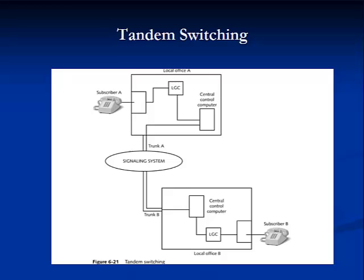A long-distance call starts just like a local call. At the end office, the LGC is scanning the SLICs, waiting for one of them to indicate an off-hook condition. After detection, it passes the digital signal to the computer. When the central control computer searches its database and determines that the destination line is not one that connects to its central office, it processes the best route available over the PSTN to connect the circuit between subscribers. Because tandem switches are primarily responsible for directing traffic over highly utilized trunks, they must be able to sense traffic patterns and adjust phone call routing quickly.